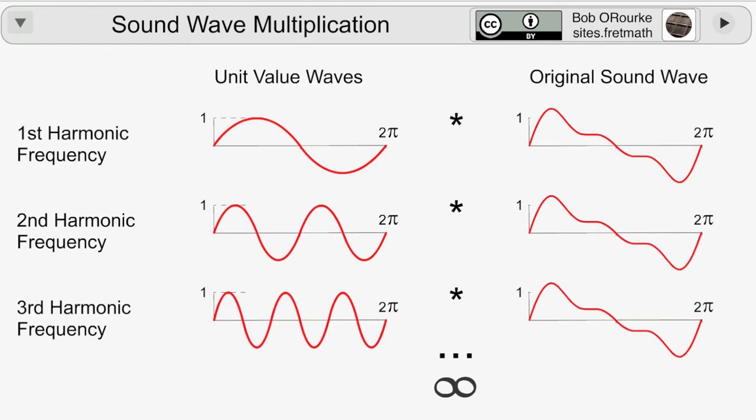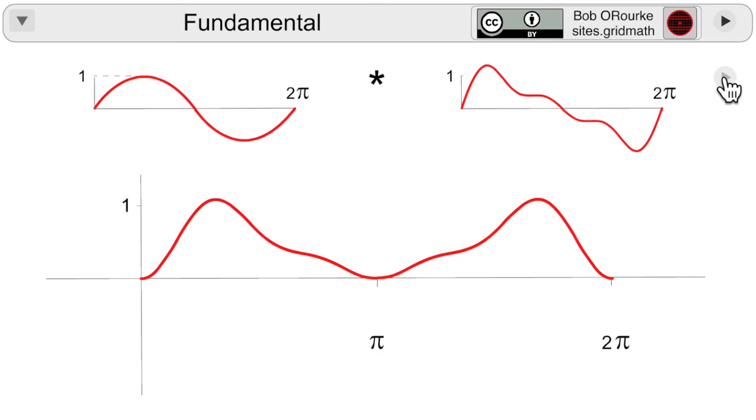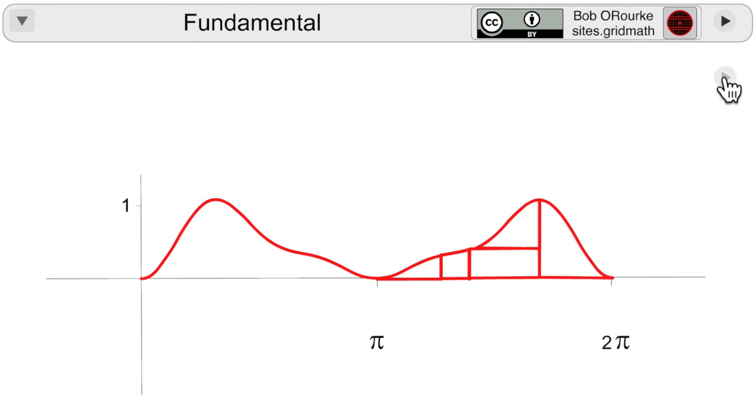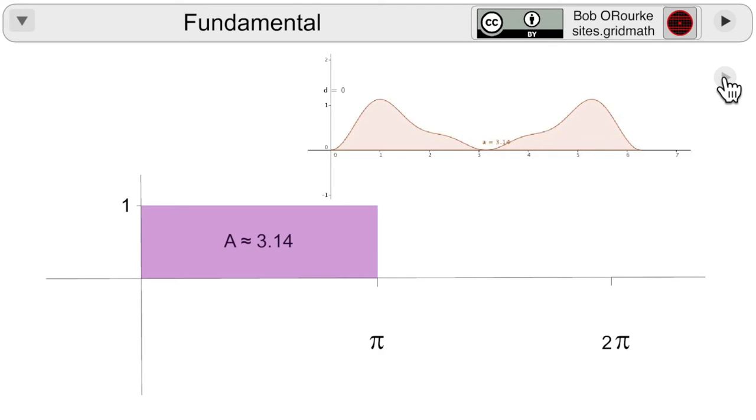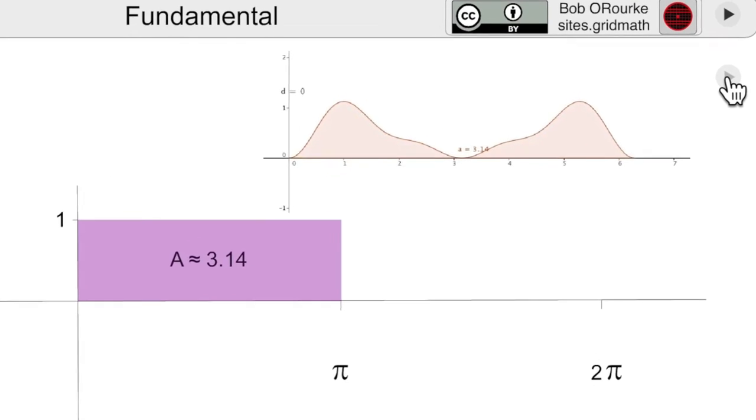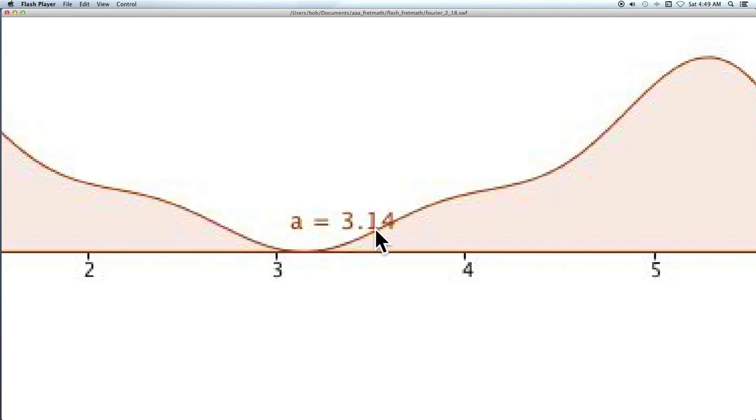The Fourier transform works in reverse. You start with the complex wave and you derive the radius of each of the component circles by multiplying the complex wave times the succession of unit amplitude waves. First, the fundamental is multiplied times the complex wave. And using a jigsaw puzzle approach, you can put the pieces back together in the shape of a rectangle with an area of about 3.14. Confirmed here using the GeoGebra software.